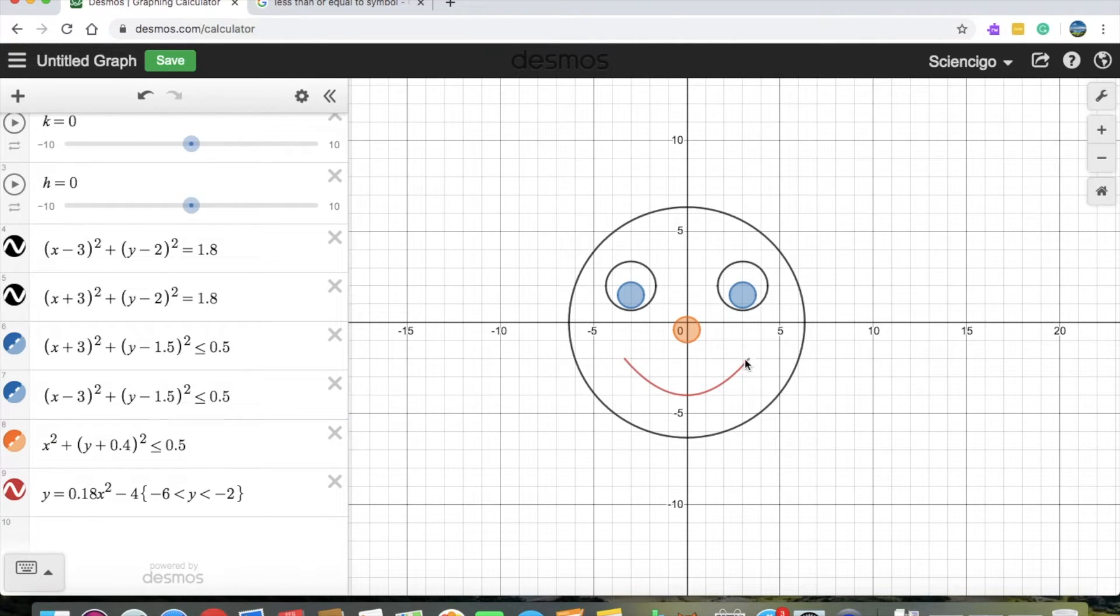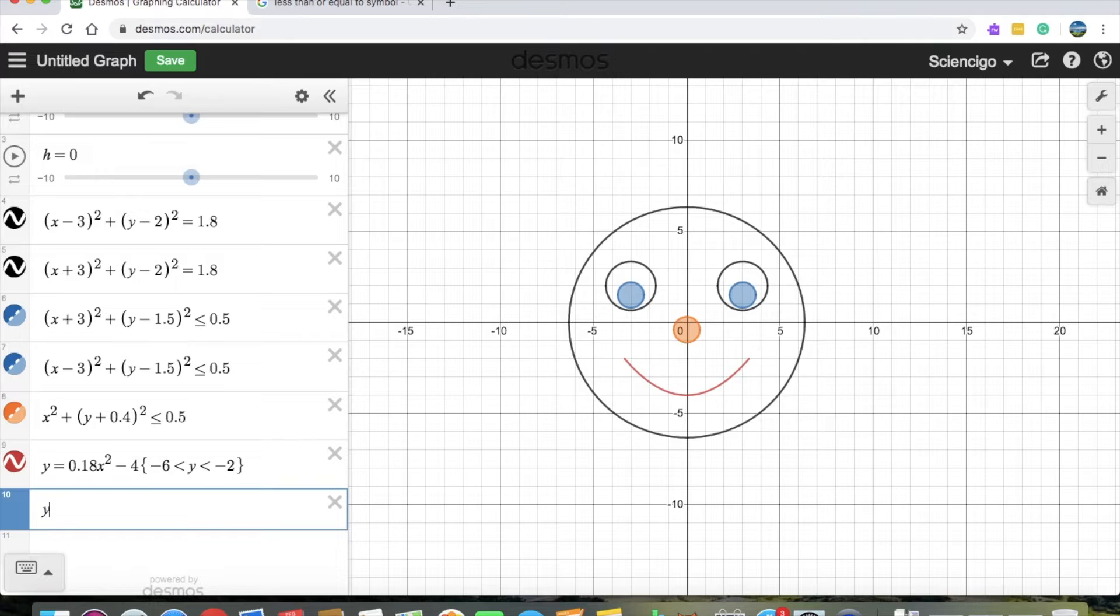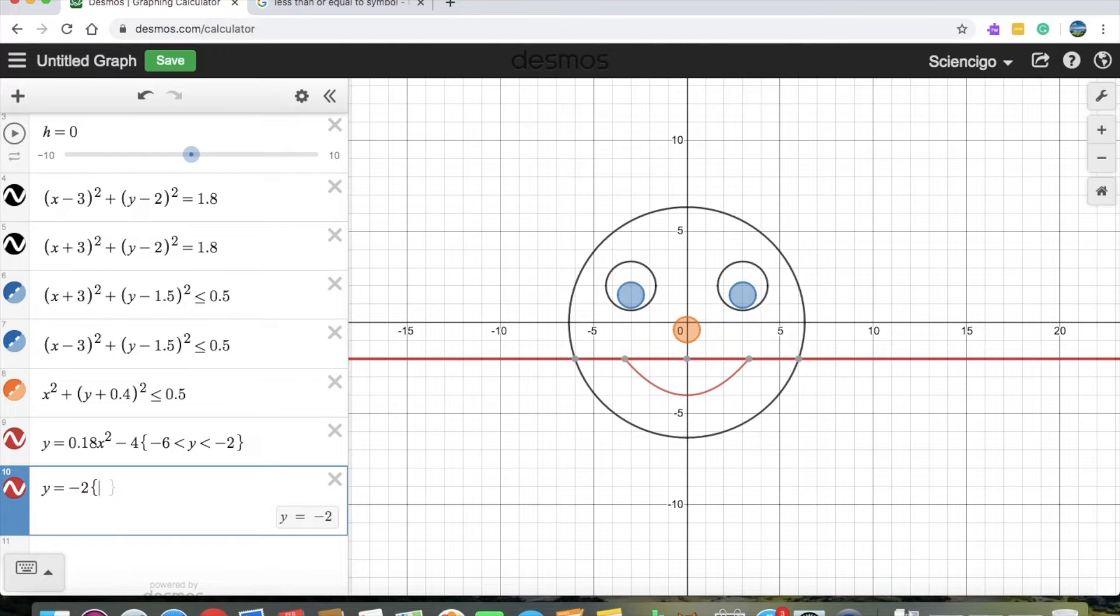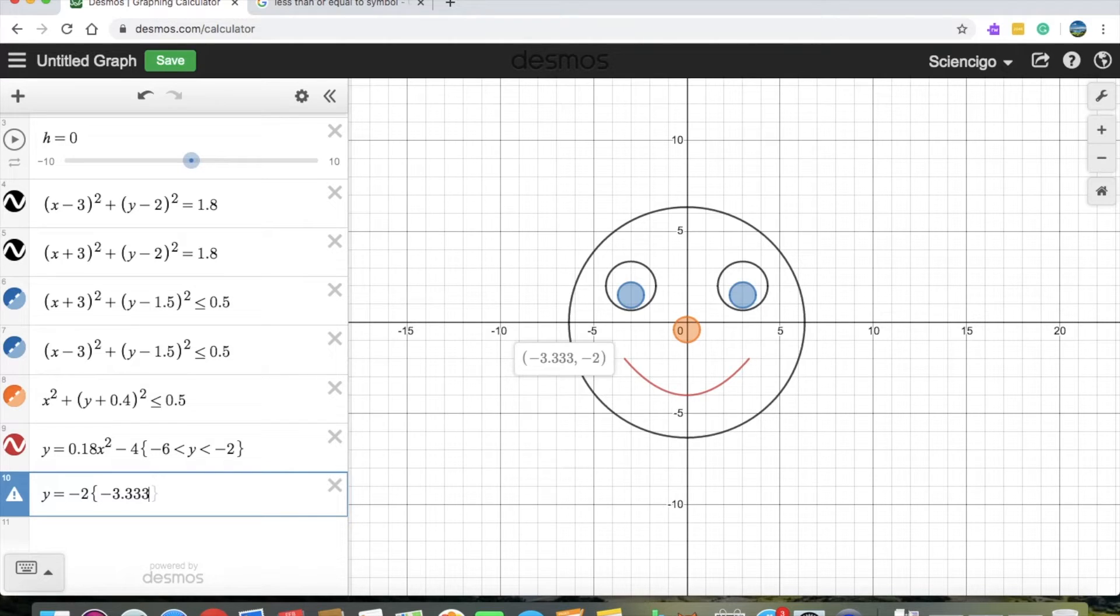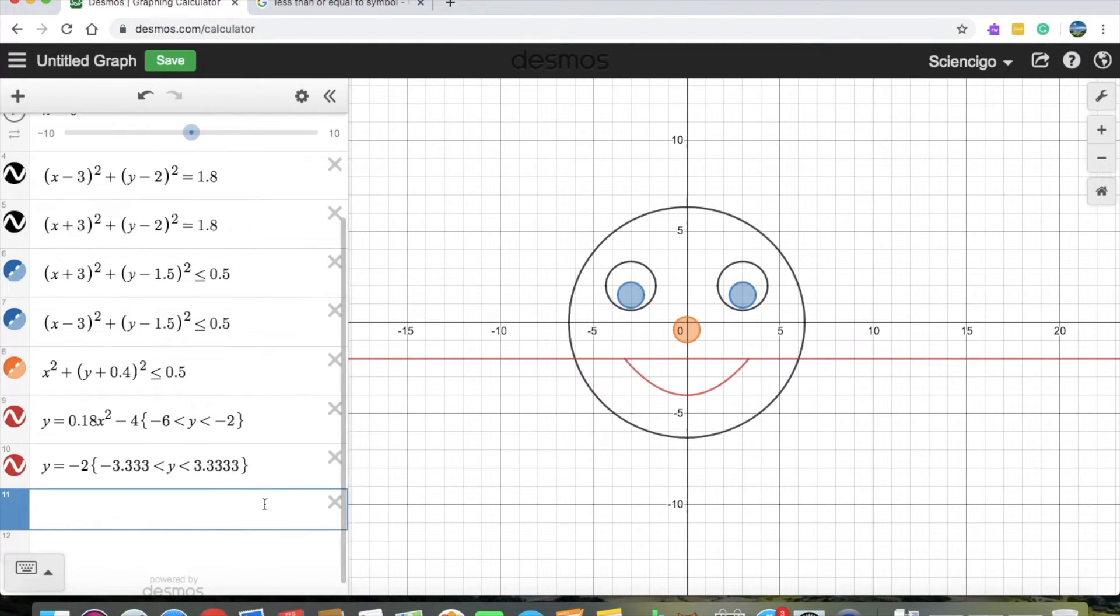Now we can add a line here and like then a tongue. So that would make it look like it's laughing. So the equation of a line will be y = negative 2. Now I'll put the curly brackets on because we don't want the whole thing. So curly bracket. We want x greater than negative 3.333 but we still want it less than positive 3.333. The y should be x because it's the x values we want to fix. So x. There we go.